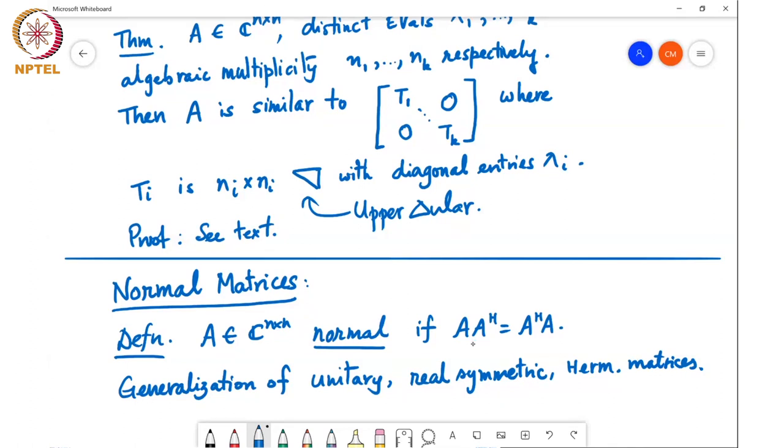Similarly, for a Hermitian matrix, this equality holds. And as a consequence, all such matrices, unitary matrix, symmetric matrix, or Hermitian matrices are all normal matrices.